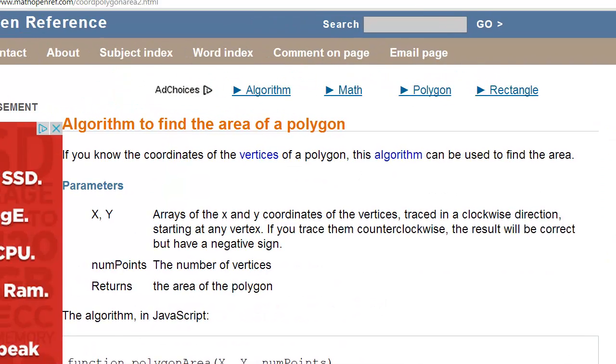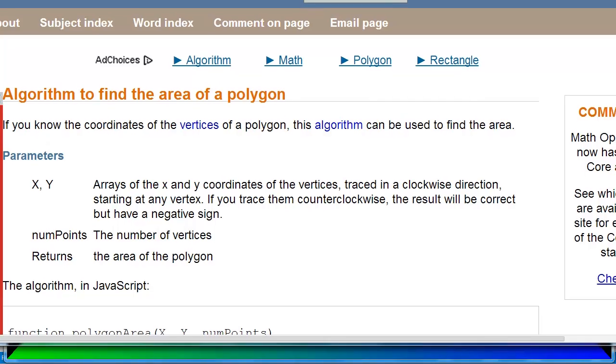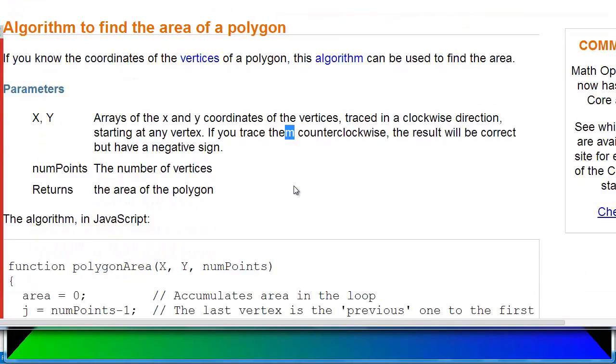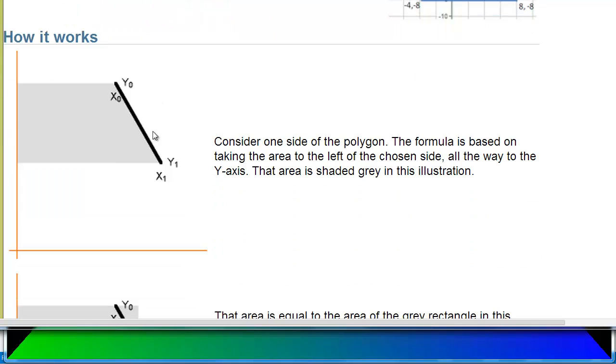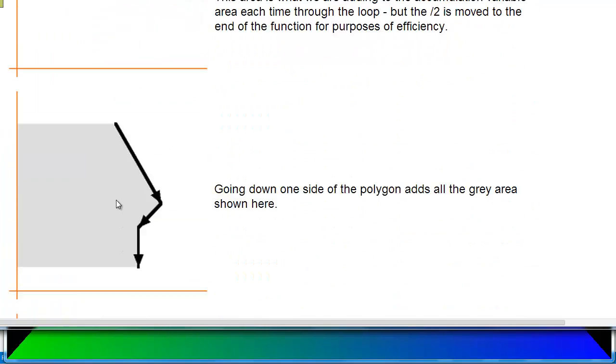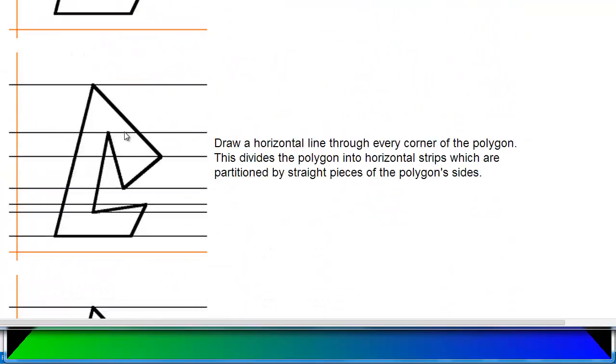And they take you through the algorithm. And then on another page here, again, mathopenref.com/coordpolygonarea2.html. They actually show you why this algorithm works. Here's some JavaScript to do it. But essentially, we're adding in volumes here and subtracting volumes away. And they walk you through and explain why that works. I encourage you to read this.